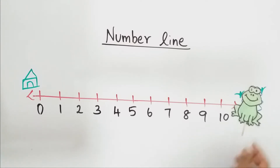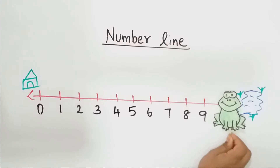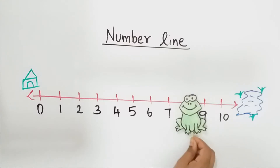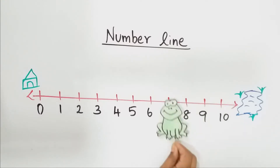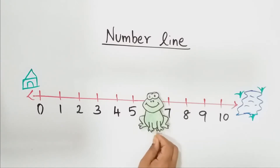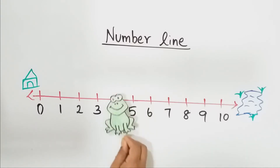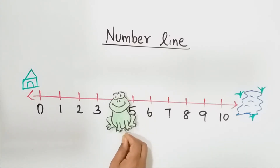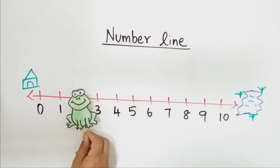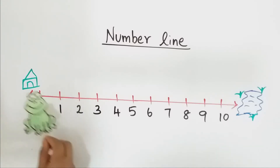So shall we help the froggy again? Now the froggy is in 10. Which is the before number of 10? 9. Which is the before number of 9? 8. Which is the before number of 8? 7. Which is the before number of 7? 6. Which is the before number of 6? 5. Which is the before number of 5? 4. Which is the before number of 4? 3. Which is the before number of 3? 2. Which is the before number of 2? 1. Which is the before number of 1? 0.